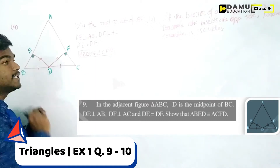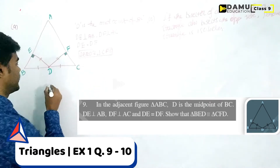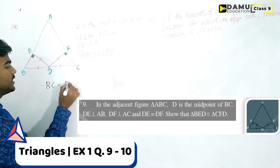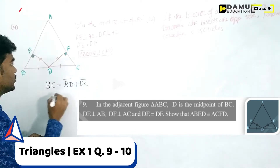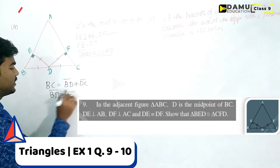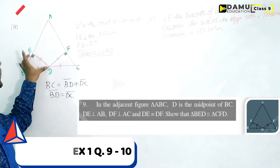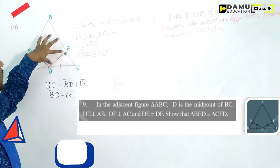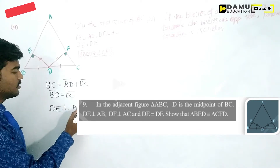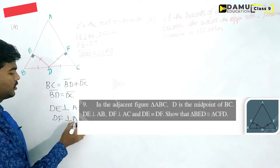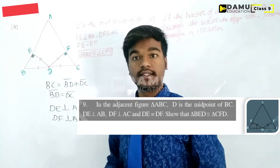We are given triangle ABC. D is the midpoint of BC, so BC equals BD plus DC, and since D is the midpoint, BD equals DC. Also, DE is perpendicular to AB and DF is perpendicular to AC, making 90-degree angles at each.